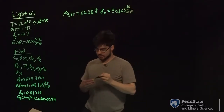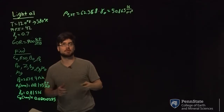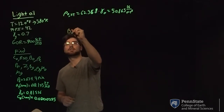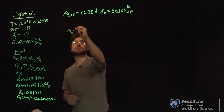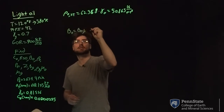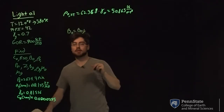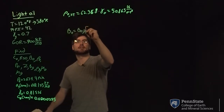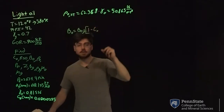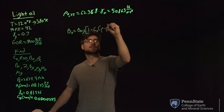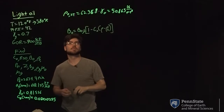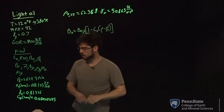Using this, we can find BO — the formation volume factor above bubble point. We're going to use this equation: BO equals your BO at bubble point (BOB), and then simplified, you have it times one minus CO times (P minus PB). You can use this equation to find your formation volume factor of oil above bubble point.